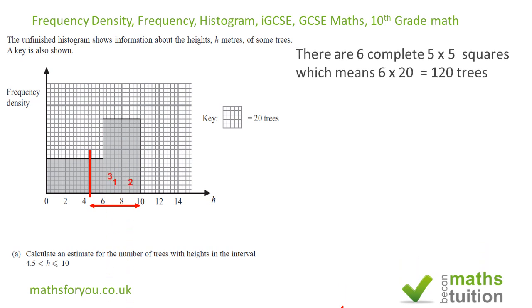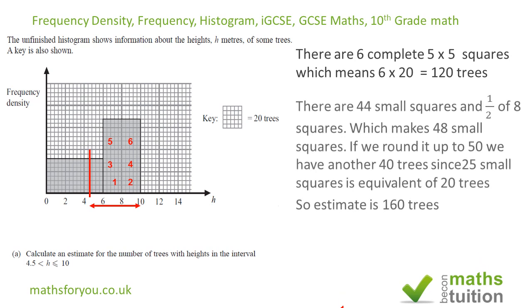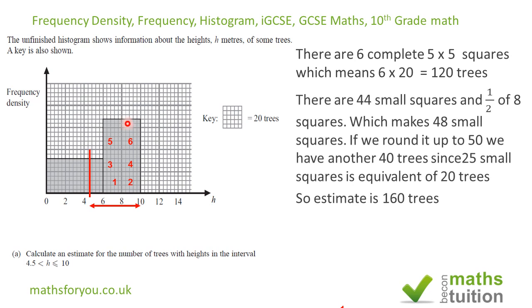And there are six complete squares. Each square, from this key given to us here, is 20 trees. So 6 times 20 will give us 120 trees.